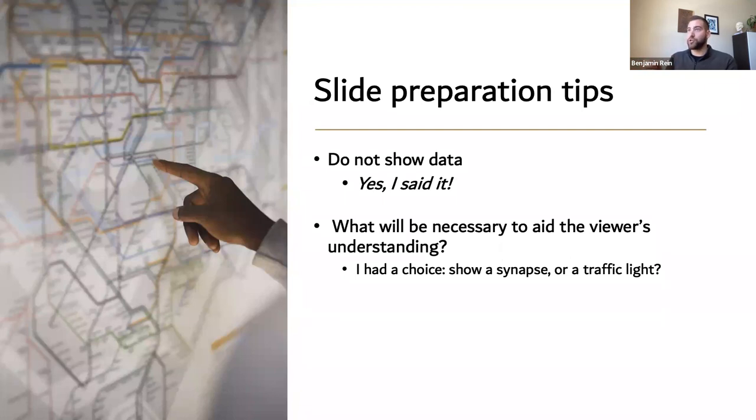A synapse on the other hand will show them this is what I'm talking about, this is what we're analogizing to a traffic light. So in my case, I found that showing a synapse was the smart move, or at least I thought it was the wise move.